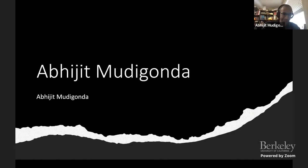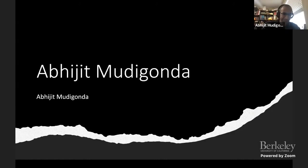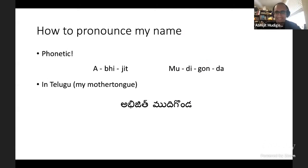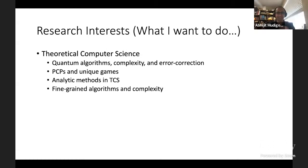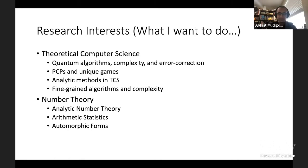Hello everyone, I'm Abhijit, and I'll be talking about myself. Like any good talk, I'm going to start by explaining the title. So this is how you pronounce my name. It's Abhijit Moodi Gonda. And in Telugu, which is my mother tongue, it's language from South India, it's spelled like this. As Gautam mentioned, I'm applying to PhD programs this cycle, and I didn't realize that this is mostly for people on the real job market. But nonetheless, here I am. My research interests are mostly in theoretical computer science. Unsurprisingly, I'm interested in all things quantum, PCBs and games, analytic methods in TCS, and fine-grade algorithms in complexity. And I also have done some number theory, and I'm especially interested in analytic number theory, arithmetic statistics, and automorphic forms.